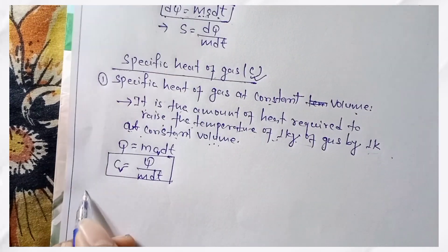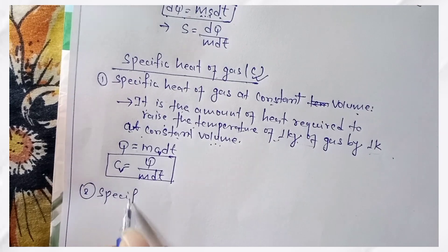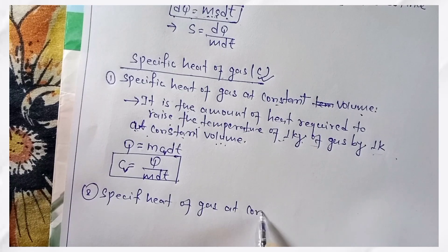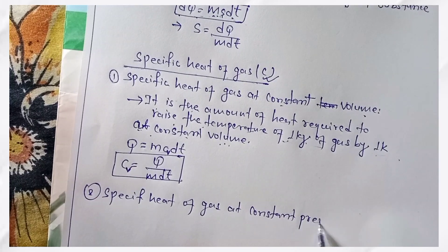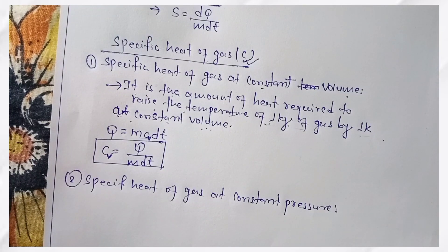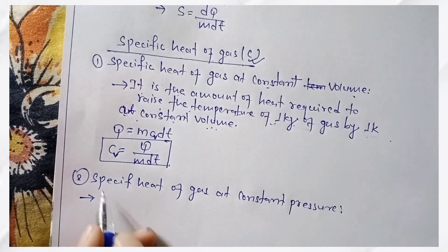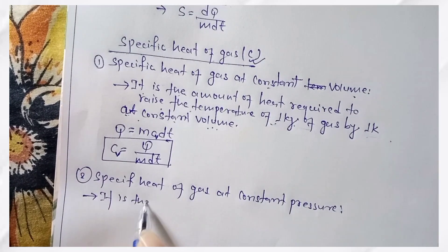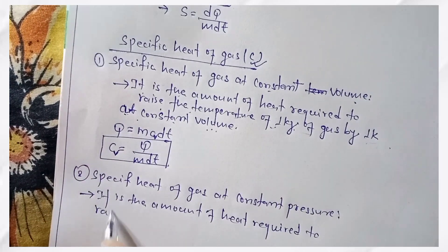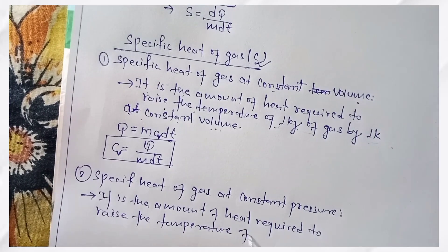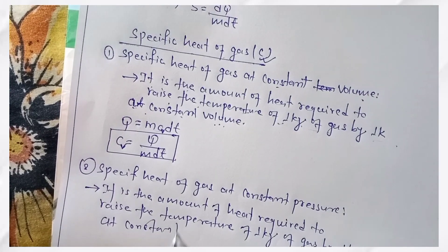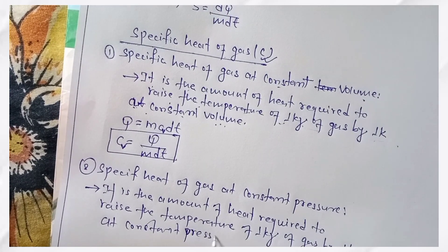Now, specific heat of gas at constant pressure. The definition: it is the amount of heat required to raise the temperature of 1 kg of gas by 1 Kelvin at constant pressure.